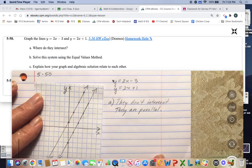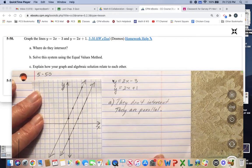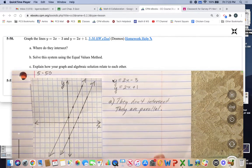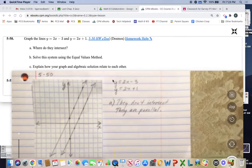All right, so we're going to go on to B, which is solving using the equal values method.